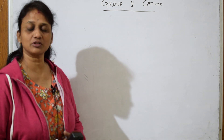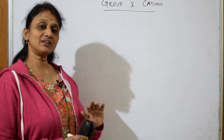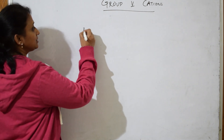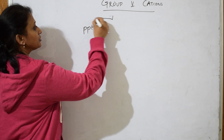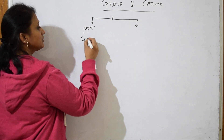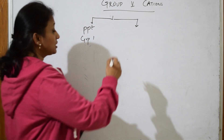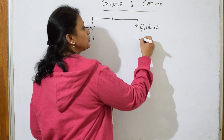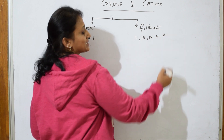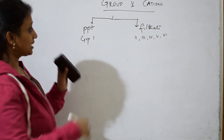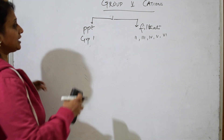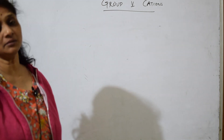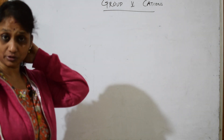Apart from the precipitate, a filtrate is also formed. That filtrate contains the other groups. For example, if a precipitate forms for Group 1, the filtrate contains Group 2, Group 3, Group 4, Group 5, and Group 6 cations. You then add the group reagent to each filtrate and rule out each group. When speaking about Group 5 cations, we take the filtrate obtained from Group 4.